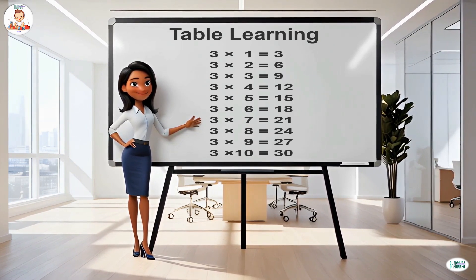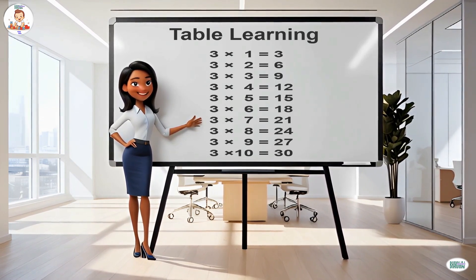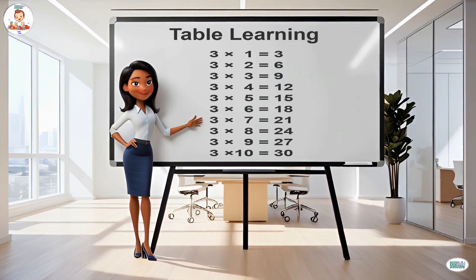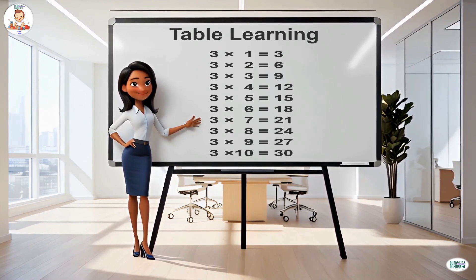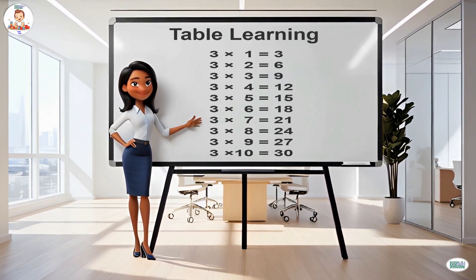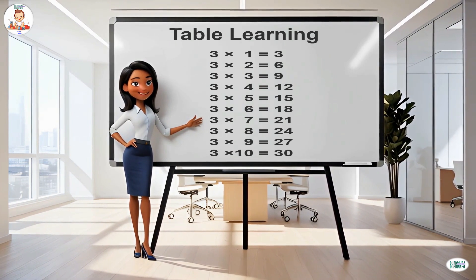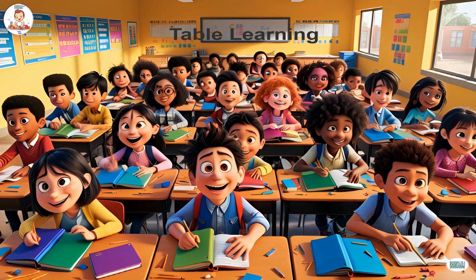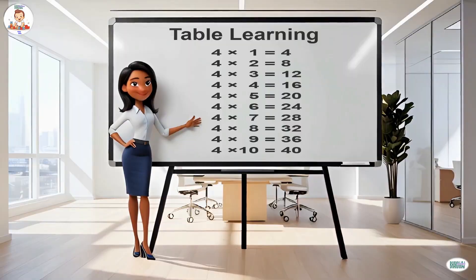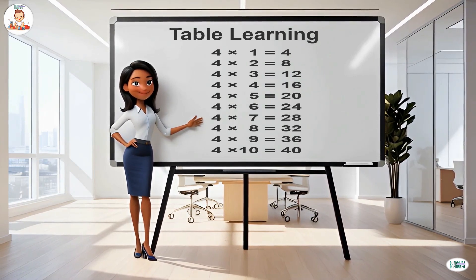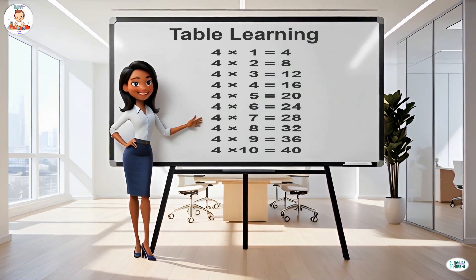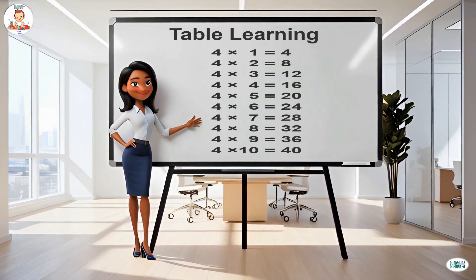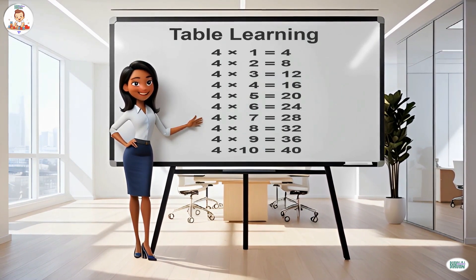Three sevens are twenty-one, three eights are twenty-four, three nines are twenty-seven, three tens are thirty. Now let's start the table of four. Four ones are four, four twos are eight, four threes are twelve, four fours are sixteen.